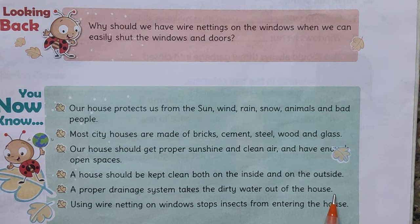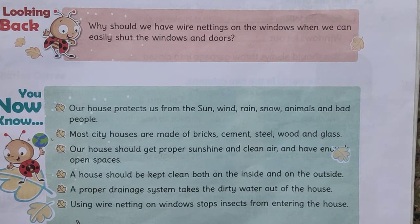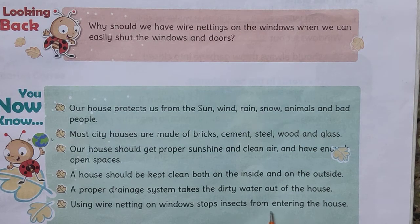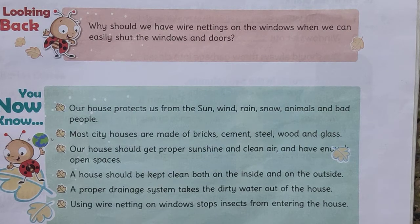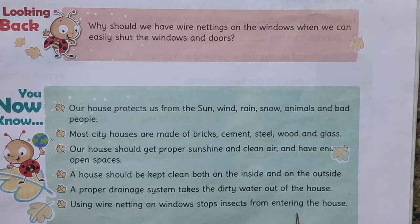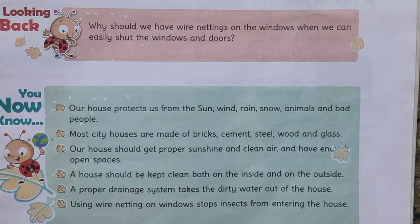A proper drainage system takes dirty water out of the house; otherwise, dirt will invite insects, germs, and diseases. Also, using wire netting on windows and doors stops insects from entering the house — this is an important aspect of maintaining a healthy home.